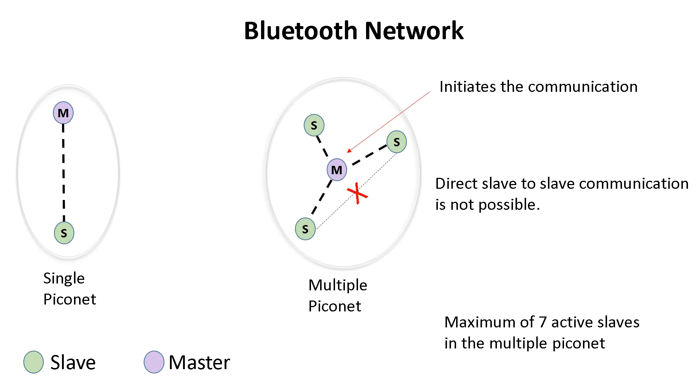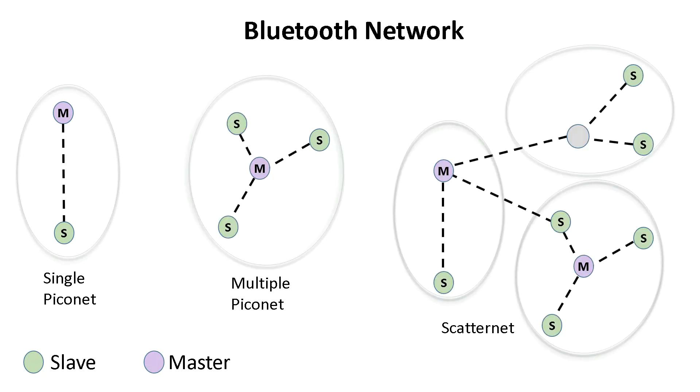A Scatternet is a combination of multiple Piconets. One thing to mention here is that a master in one Piconet can be a slave in another Piconet. So you have here an example of this Bluetooth device in gray where it is a master for these two slaves, but it is a slave for this master in the other Piconet.